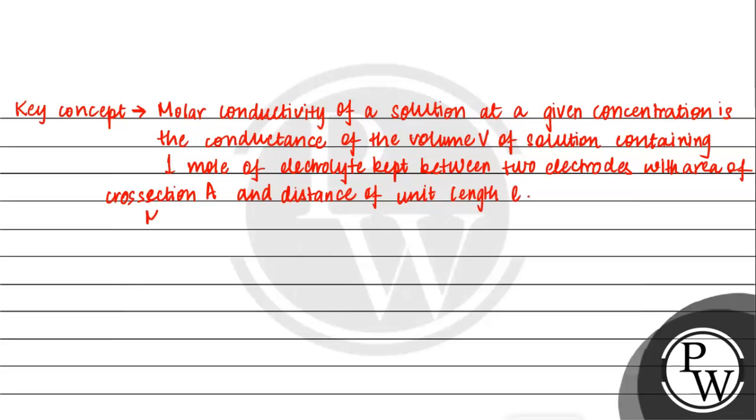If we represent this mathematically, lambda m is equal to conductivity times area of cross section divided by unit length. We know that L is equal to 1 because we have taken unit length, and A is equal to V. So our molar conductivity formula is kappa times V.